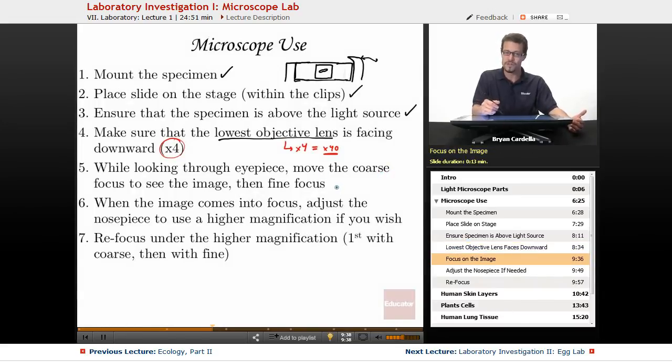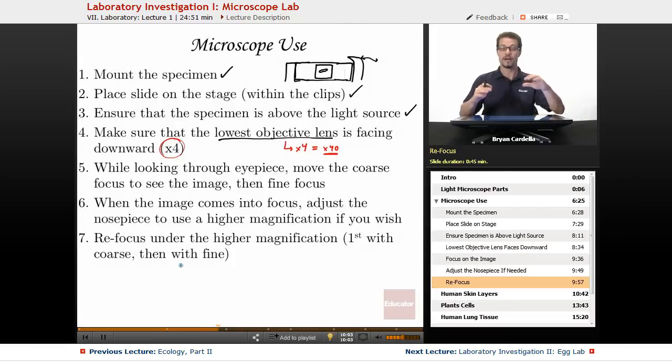While looking through the eyepiece, move the coarse focus to see the image, then the fine focus. Like I told you on the previous slide, you want to start with that coarse focus. That's the one that moves the stage up and down, then when it's nice and crisp, then move the fine. When the image comes into focus, adjust the nose piece to use a higher magnification if you wish. Like I said, you can then move to the times 10, to the times 40 and refocus under that higher magnification. Always go a little bit with the coarse. Once you've actually moved the stage to the right location, usually you don't have to move the coarse focus that much. Just a little bit just to fine tune it and then fine focus, you can move freely back and forth. And it's as if you're looking at very tiny cross sections along the cells. Sometimes if a tissue is a little thicker than one cell, when you move the fine focus, you can see like you'll actually start to see the top of the tissue come into focus and the bottom of the tissue come into focus. It's pretty fascinating how you can zoom into very specific parts of tissues by using the fine focus while you're looking through.